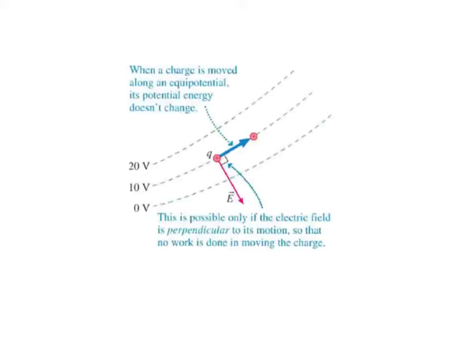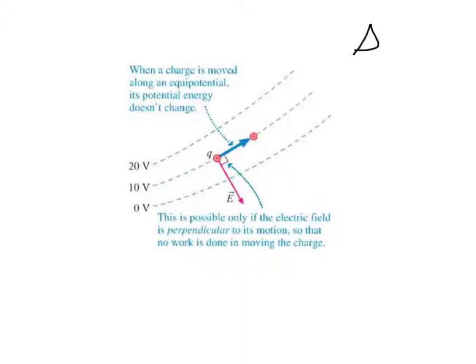Suppose another charge moves along a short distance along one of the equipotentials, like we see in this picture here. We've got these equipotentials here, so we know that there's some source charge back over here. This is a small test charge that we're bringing into the area around that source charge, and it moves from this point to this point along or parallel to an equipotential. Because it moves parallel to the electric potential line, the electric potential — and therefore the electric potential energy — does not change. Potential energy is the same at the beginning and end of this test charge's displacement. Since work is the change in energy and no energy has changed, then no work is done in moving this charge.